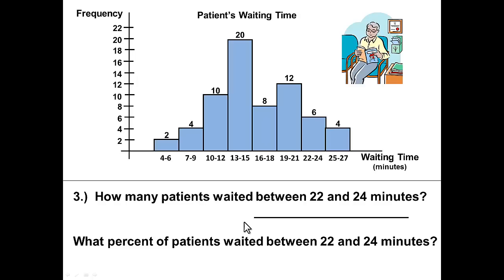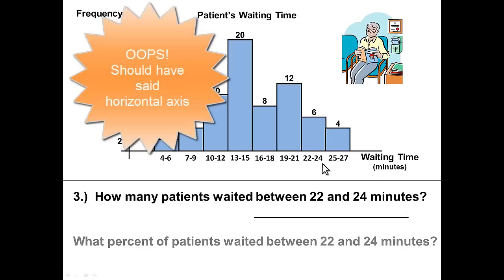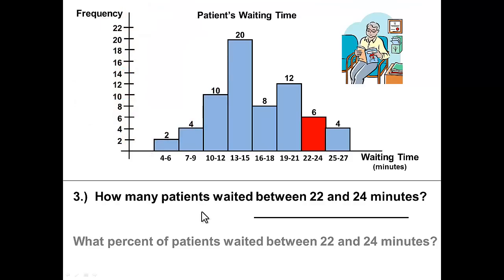How many patients waited between 22 and 24 minutes? Well that's the minutes so that will be along the vertical axis and will be this bar here. But the question is asking how many so the answer is 6.